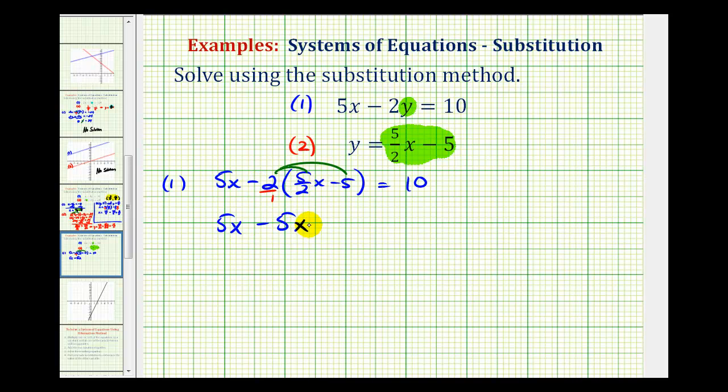And then for the second product, we can think of this as negative two times negative five, which is positive ten. So we'd have plus ten, equals ten. Notice how we do have like terms here, and five x minus five x is actually zero. So we're left with ten equals ten.